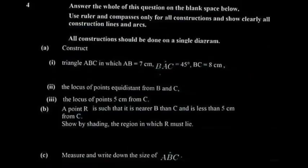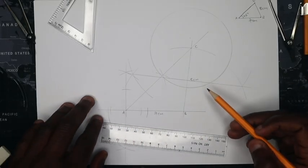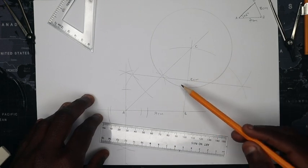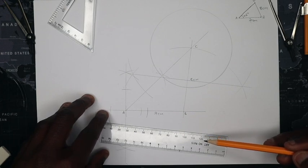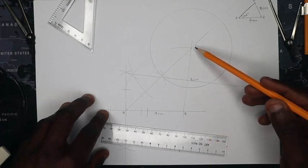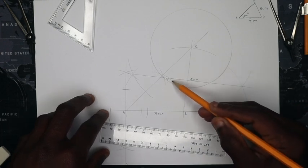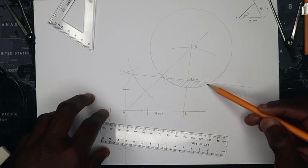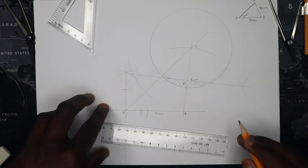Point R is inside triangle ABC such that it is nearer to B than to C, and less than 5 centimeters from C. The perpendicular bisector of BC marks points equidistant from B and C — so nearer to B means the region on B's side of that bisector. Less than 5 centimeters from C means inside the circle. Shade the region satisfying both conditions — that shaded area is region R.